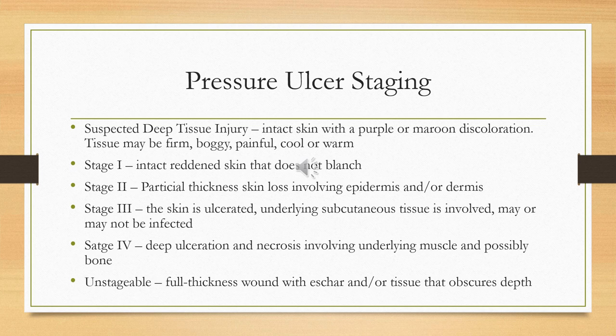Stage two is partial thickness loss — meaning loss of the epidermis and/or dermis. The wound is open, whereas in stage one it is not. Stage three is full thickness loss down to the subcutaneous tissue — below the epidermis and dermis but not yet at bone or muscle.